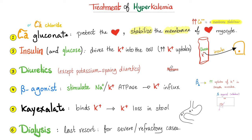When everything hits the fan, it's time for dialysis. If the kidney is not going to remove potassium naturally, we will do it artificially. Please memorize these six steps of treating hyperkalemia.